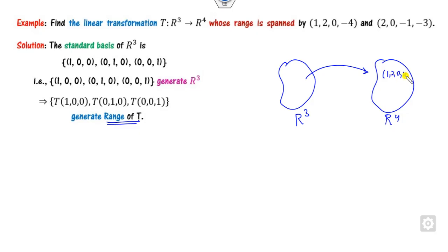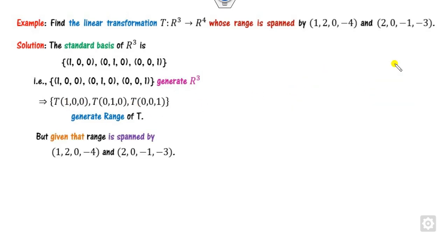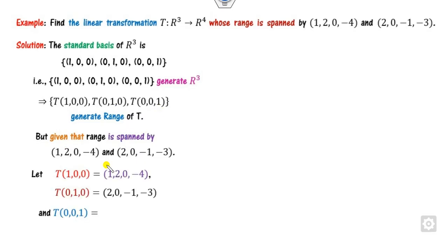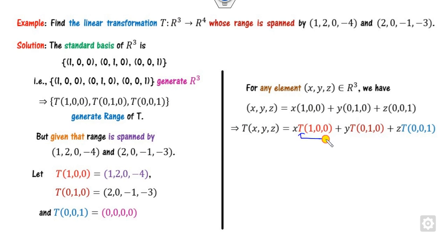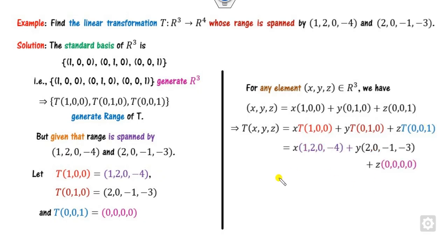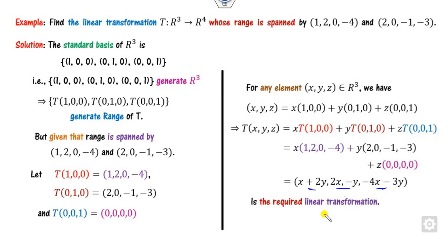The given spanning vectors, including (2, 0, -1, -3), must be present in R4. So I take these vectors and assign them as images of the basis elements. I can consider the first basis element mapping to one given vector, the second to another, and choose the third mapping as 0 since it is not specified. Then, writing any element of R3 as a linear combination of the basis and applying T, substituting the assigned values gives the required linear transformation, with components x+2y, and so on.